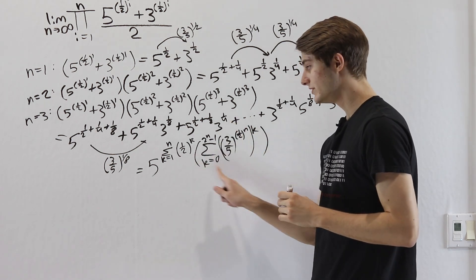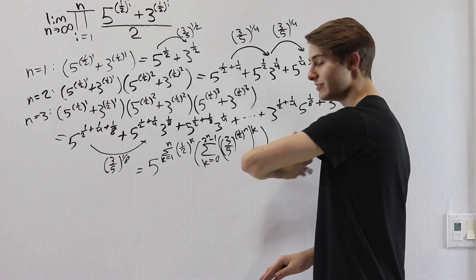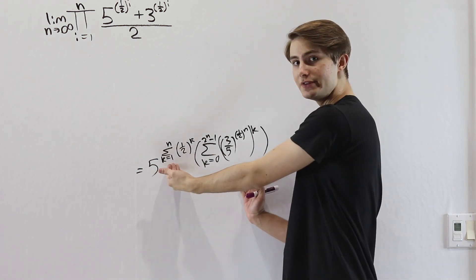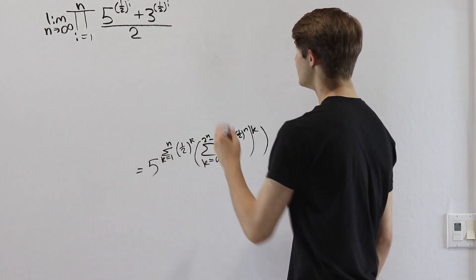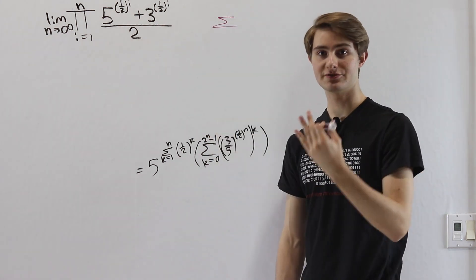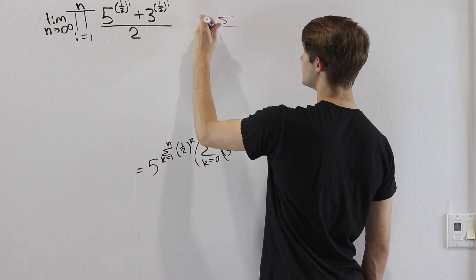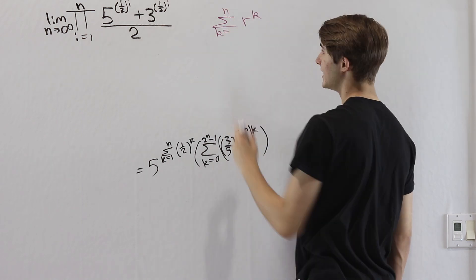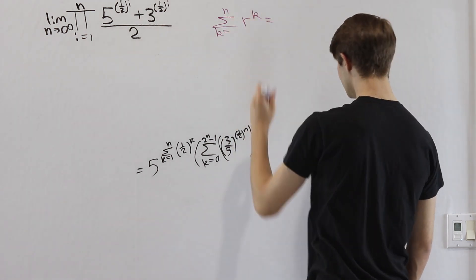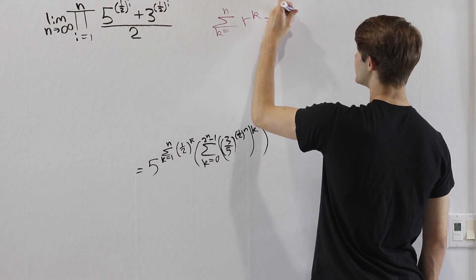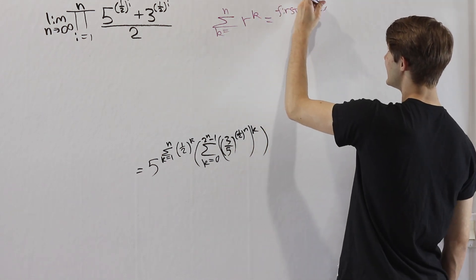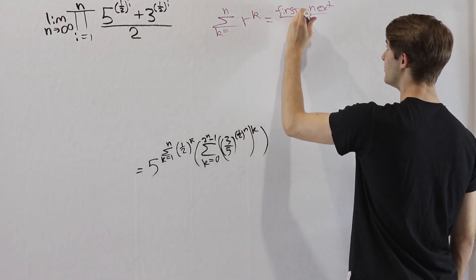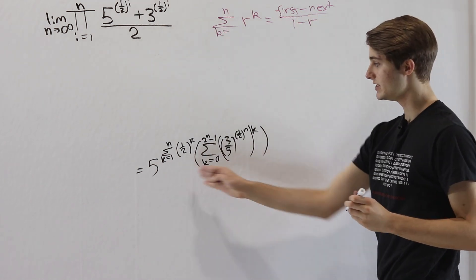Now we want to evaluate each of those two sums separately. The general formula for a finite geometric series: the sum from k equals 0 (or 1) to n of r^k equals (first term minus next term outside the series) divided by (1 minus r).